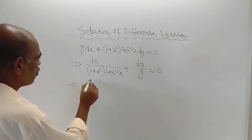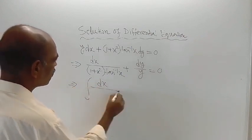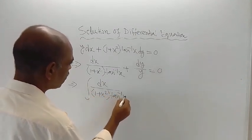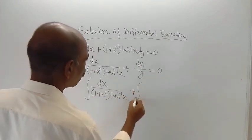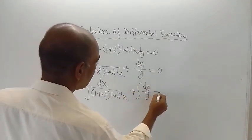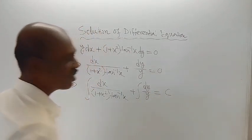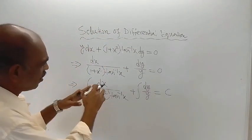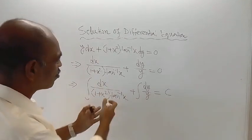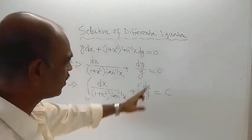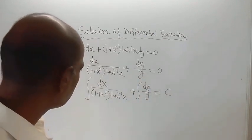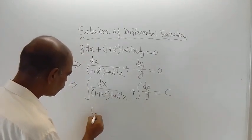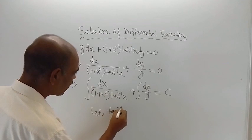Now integrate both sides of this equation. Integration of dy by y is log of y to the base e, and there will be a constant of integration c. Directly integration of the x-side is not possible. To solve this, just assume tan inverse x is equal to z.